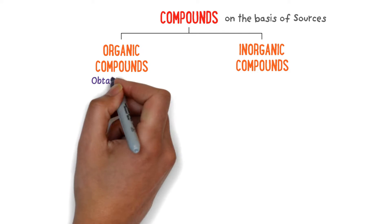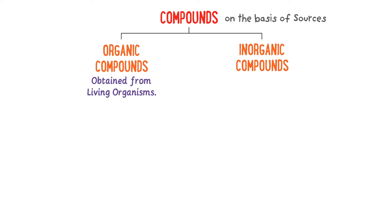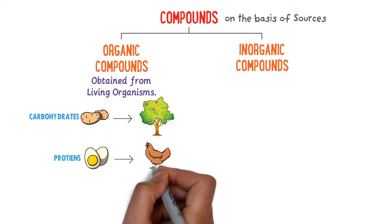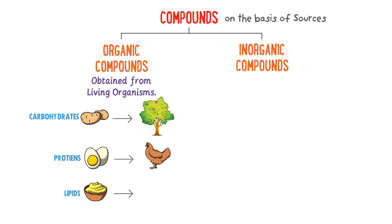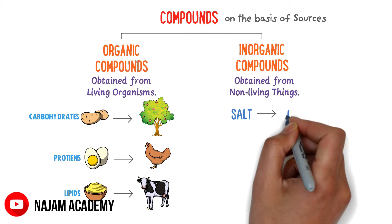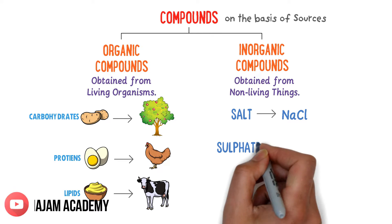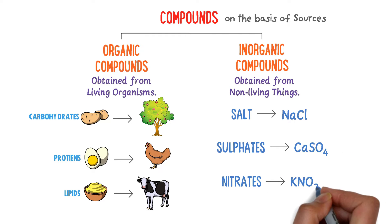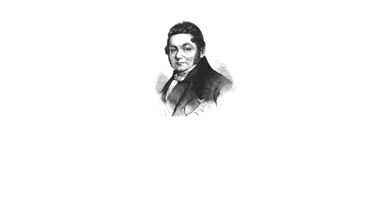Organic compounds are obtained from living organisms. For example, carbohydrates are obtained from plants, proteins are obtained from animals, and lipids are also obtained from animals. Inorganic compounds are obtained from non-living things. For example, salts like table salt, sulfates like calcium sulfate, and nitrates like potassium nitrate — these are all inorganic compounds.